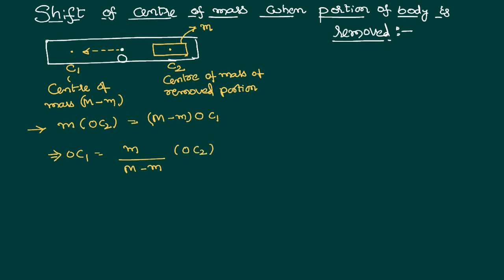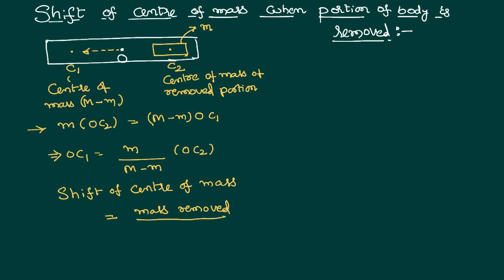OC1 is the shift of the center of mass from the original location to the new location, so we call OC1 the shift of the center of mass. This is because we have removed a portion equal to small m. Small m is the mass removed from the system, capital M is the total mass, and therefore capital M minus small m is the mass remaining in the system after the removal.